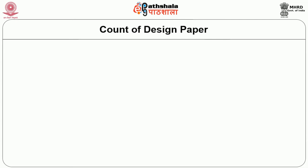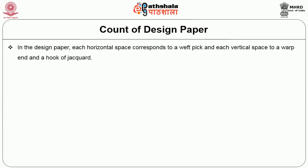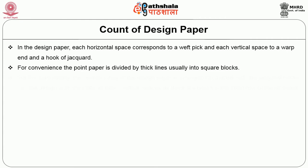We will go into a brief about the count of a design paper. The design paper comes in different counts and sizes because the corresponding horizontal and vertical spaces each indicate a warp end and a hook of the jacquard. For convenience, the point paper is divided by thick lines, usually into square blocks, to make it convenient for a person using a piano card cutting machine to cut or punch the cards. In a piano card cutting machine there are around 8 punch keys on the back side used to punch a hole or a blank in the card.